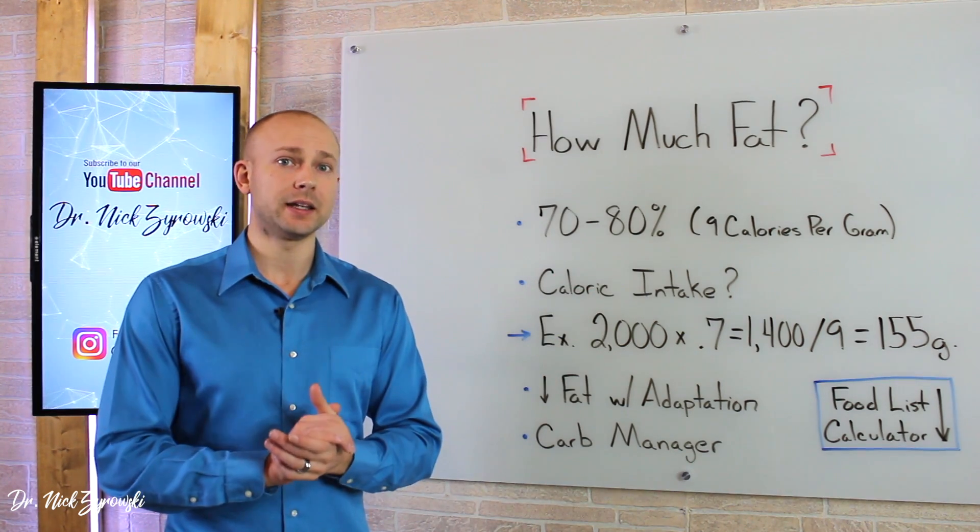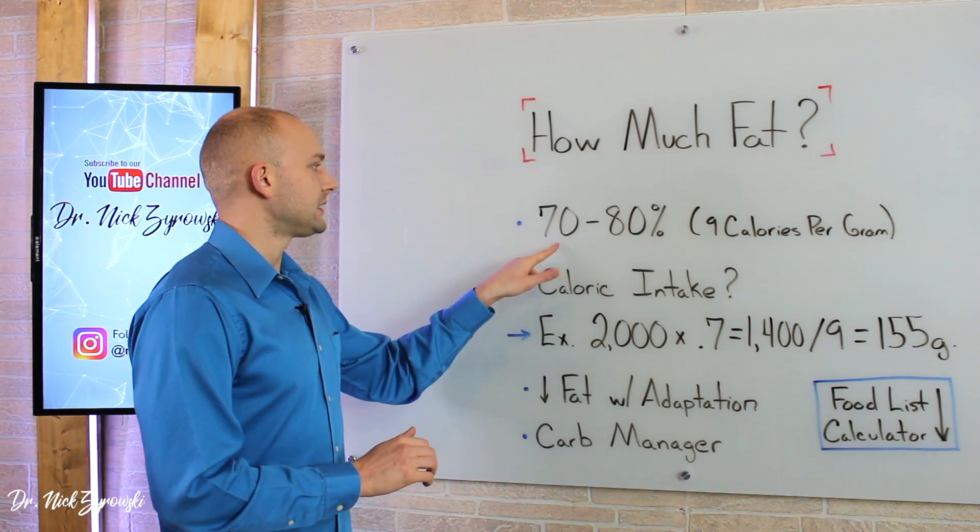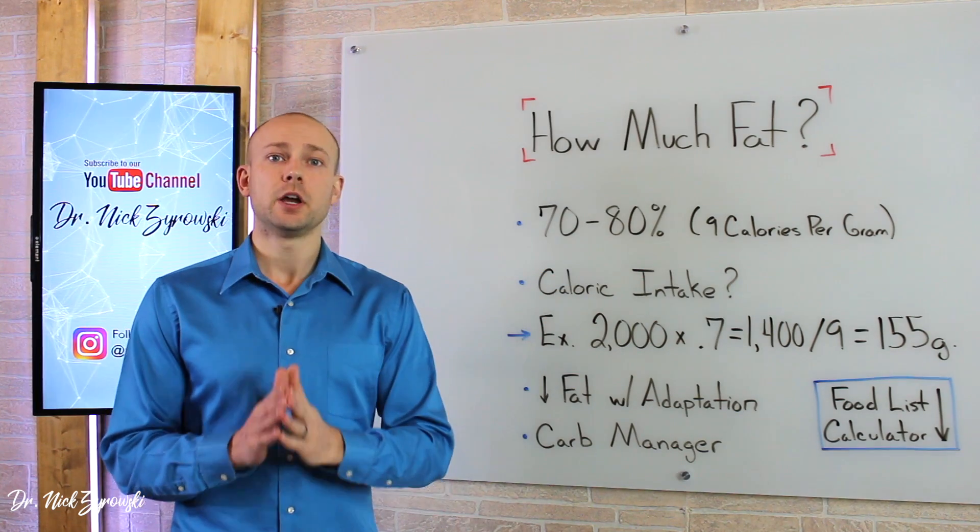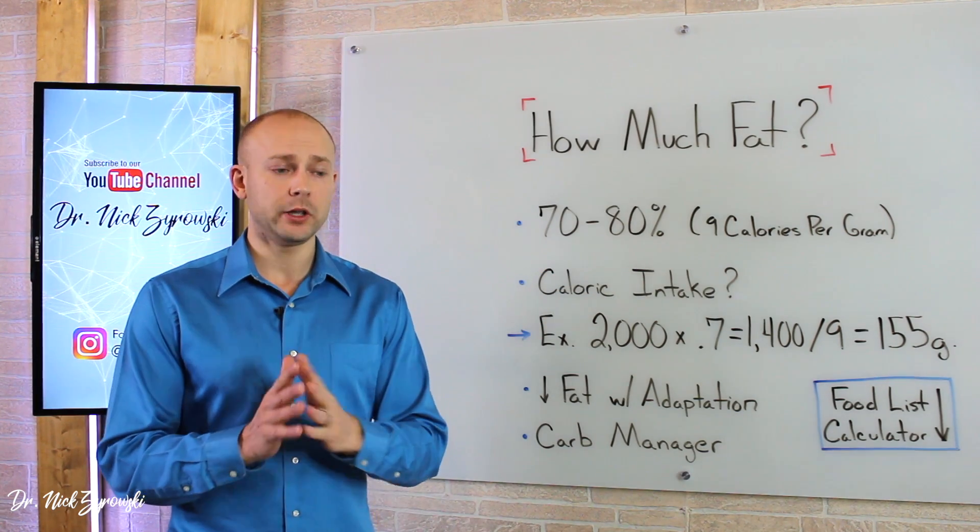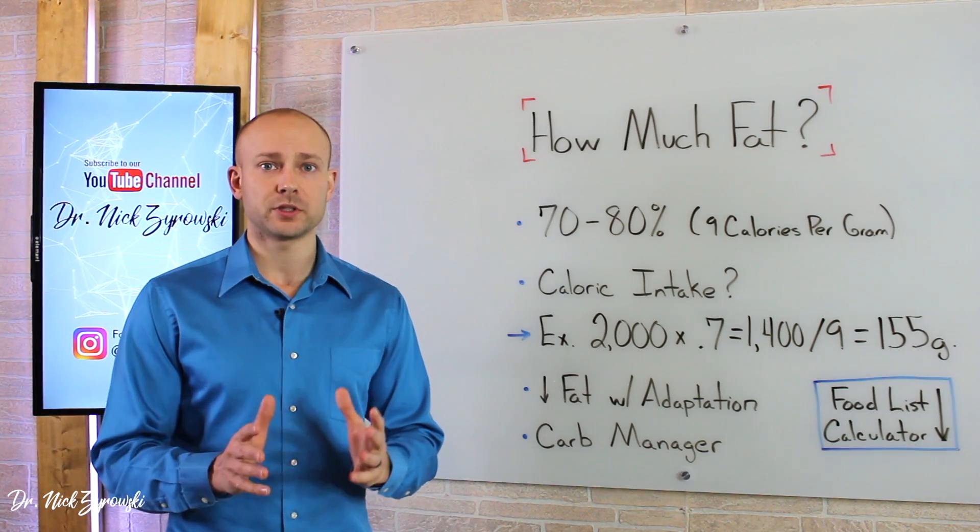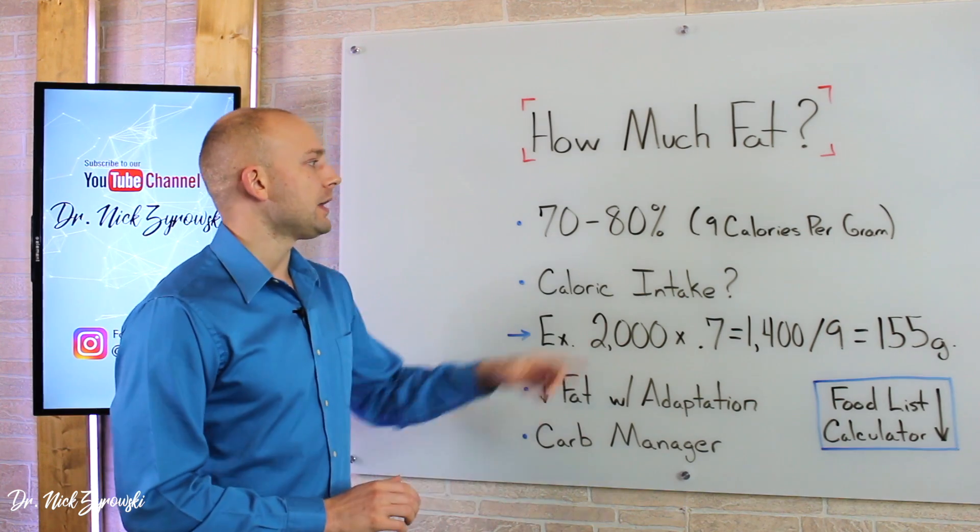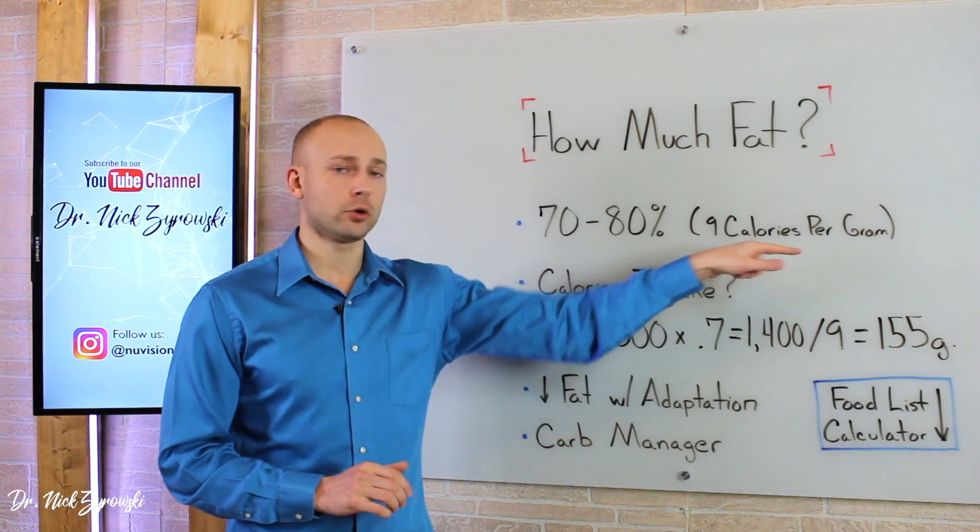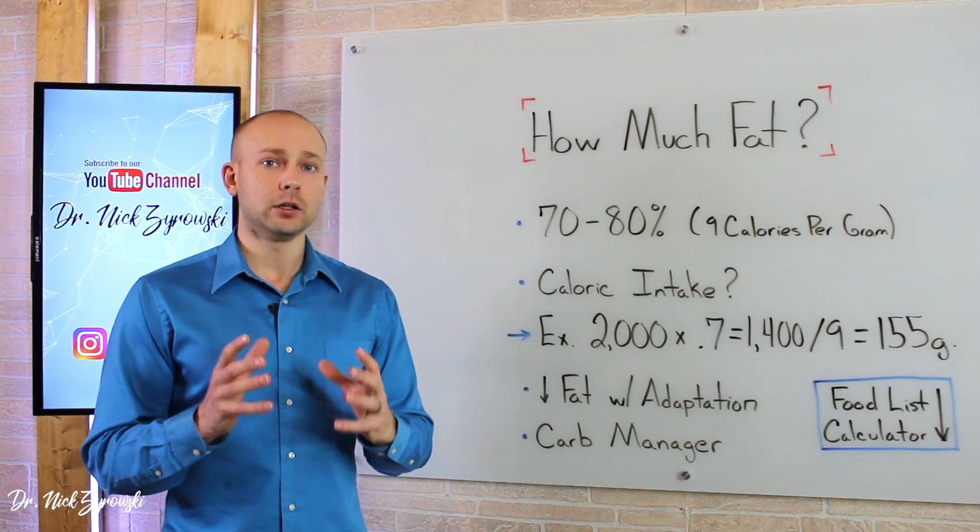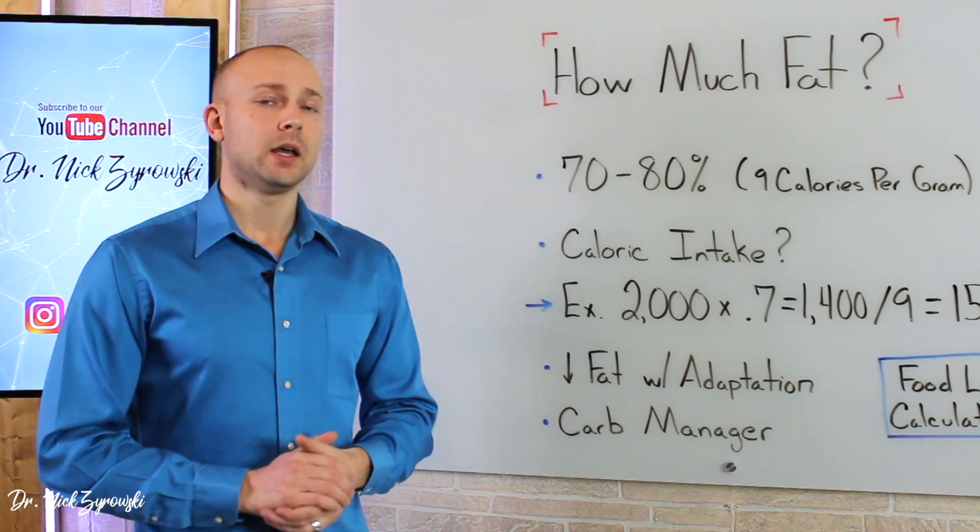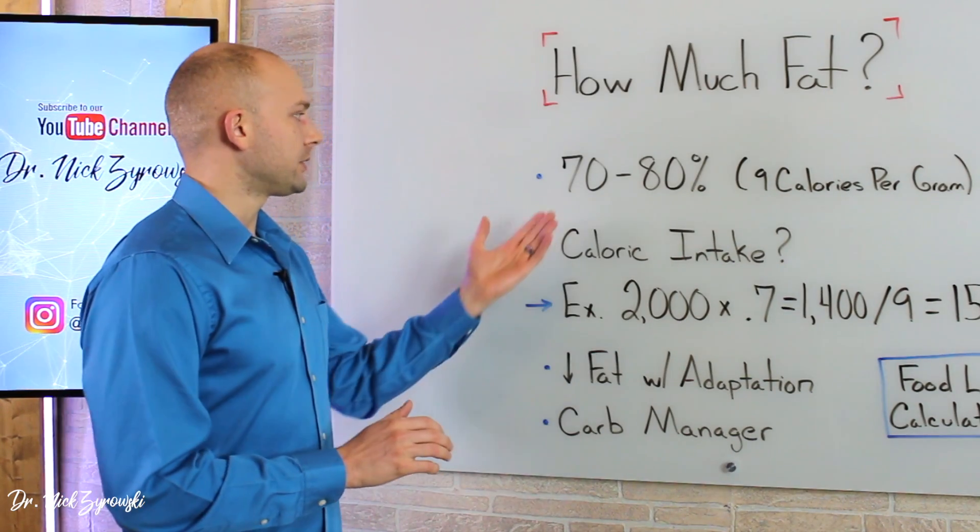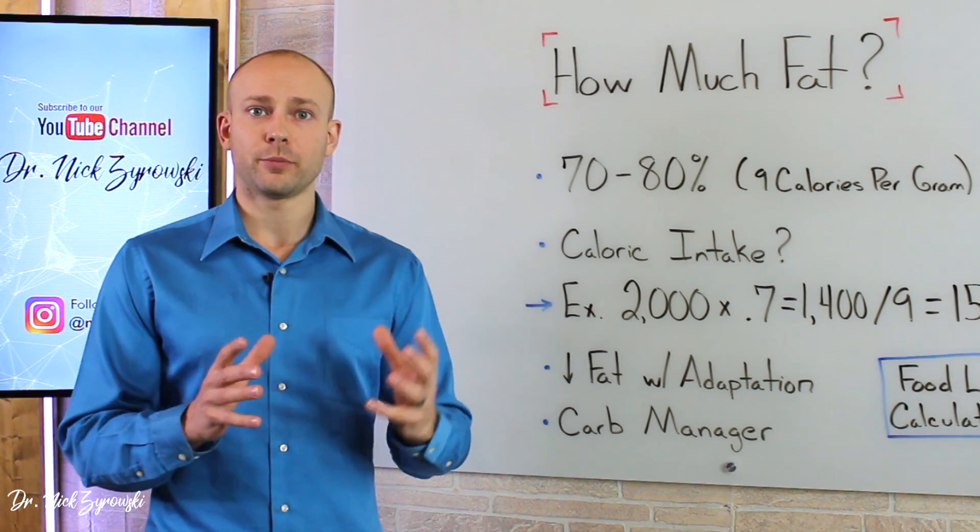When we look at the ketogenic diet, it's estimated that you're supposed to consume 70 to 80 percent of your calories from fat. That sounds really overwhelming because that's an enormous amount of fat, but we have to remember that there are nine calories per gram of fat, so a little bit of fat goes a long way. Now, the other thing we have to realize is that a lot of people get thrown off by this a little bit.